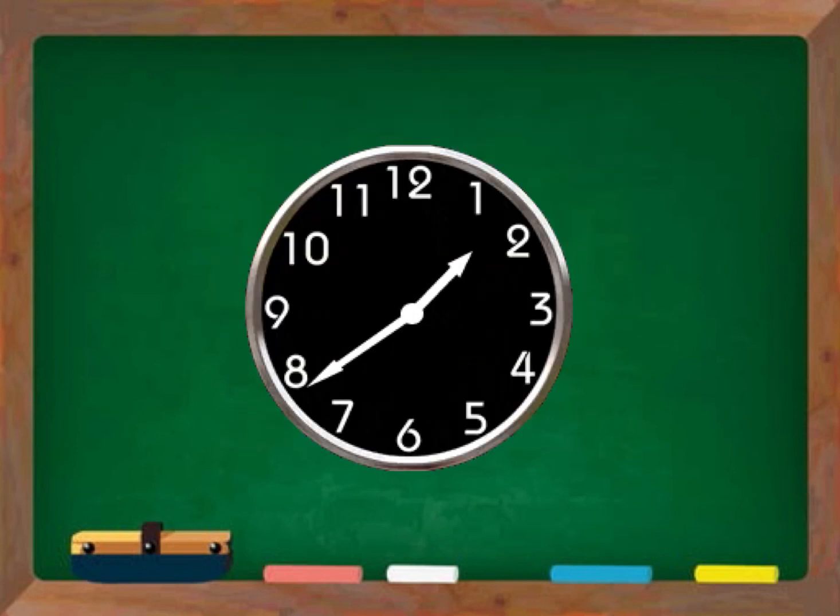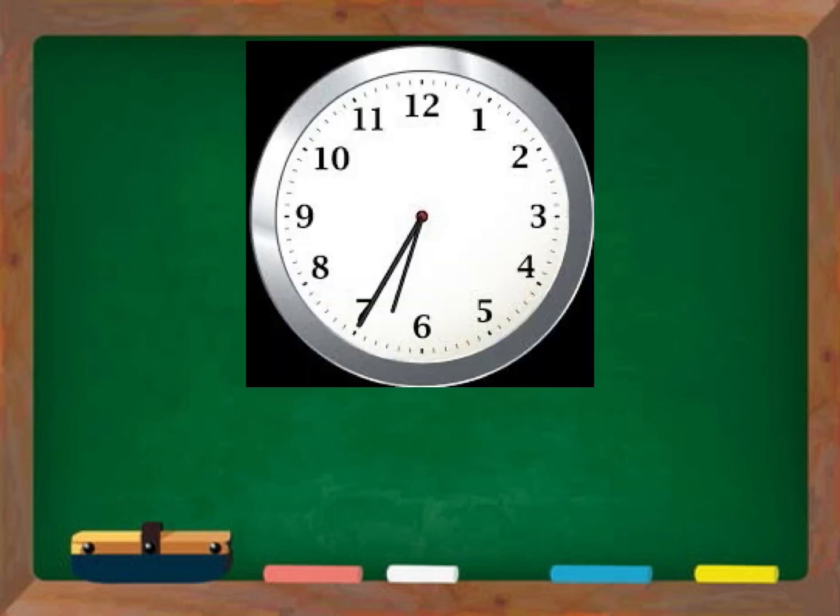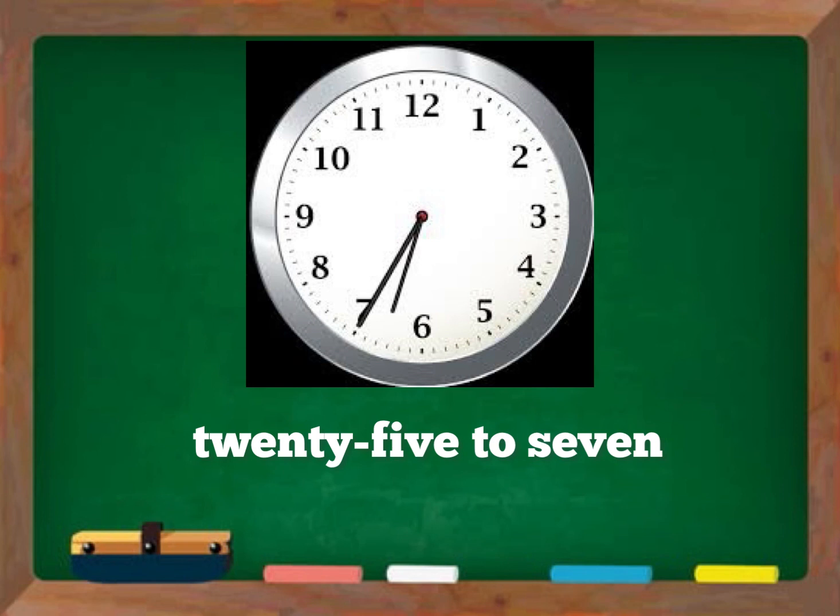But wait, after half past it changes. Then we count how many minutes there are before the next hour. So it's twenty-five to seven. It's twenty-five to seven.